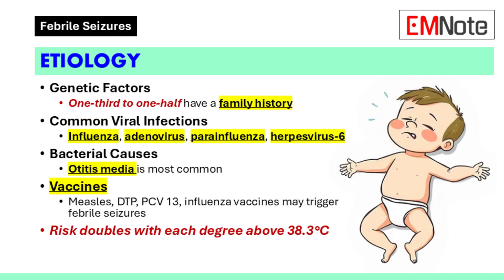Genetic factors contribute to febrile seizures. Approximately one-third to one-half of children with febrile seizures have a family history. Common viral infections associated with febrile seizures include influenza, adenovirus, parainfluenza, and herpesvirus 6. Otitis media is the most common bacterial cause.